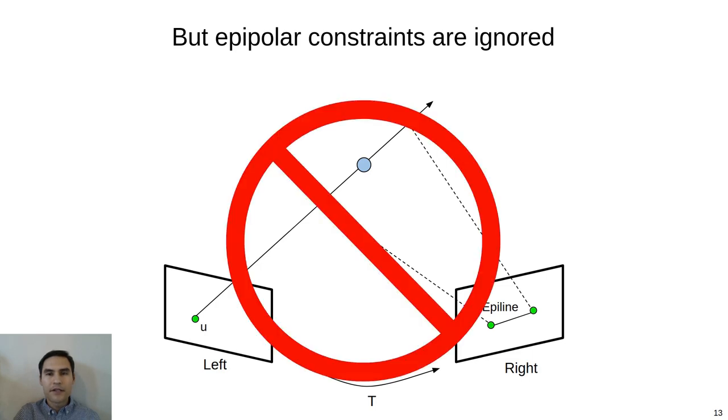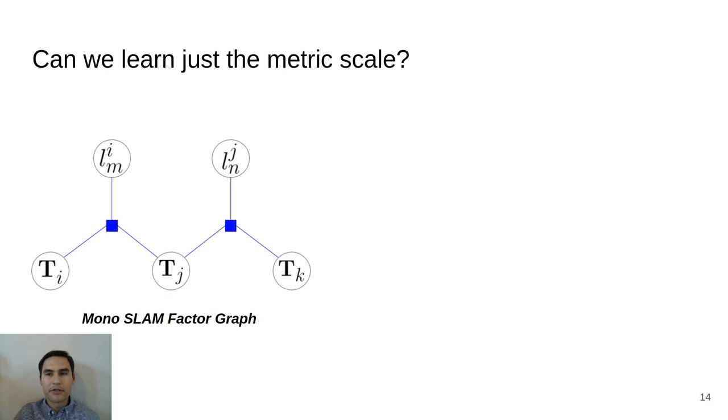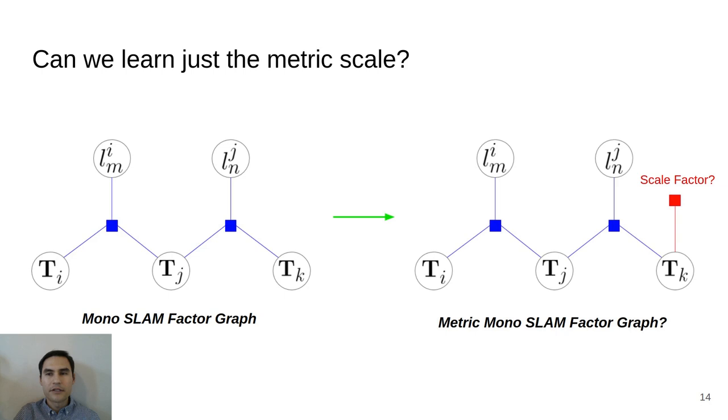Is there a way for us then to use learning to infer just the metric scale, the single unobservable quantity in the monocular SLAM problem, while obeying the epipolar constraints generated by our sensor data? In this work, we develop a solution for this approach.